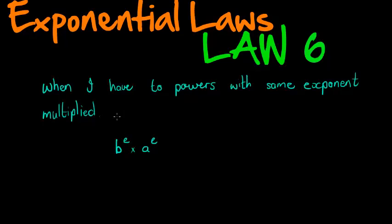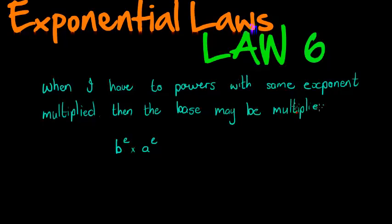So when the exponents are the same, then the bases may be multiplied — the bases may be multiplied. In other words, we keep the exponents the same, so the base times base — those two are multiplied, whatever that a times b is — and that product now gets the exponent.